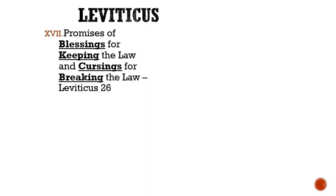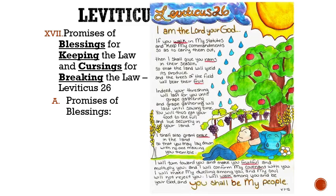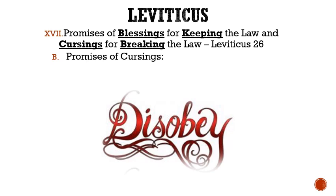Roman numeral 17: Promises of blessings for keeping the law and cursings for breaking the law are given in Leviticus 26. Promises of blessing included rain for crops, abundance of crops, peace in the land from both animals and humans, victory over their enemies where they would see five men defeating a hundred and a hundred defeating a thousand, and God's manifested presence. However, the promises of cursings included terror, sickness, fever, crop failure, defeat in battle, and wicked rulers. And if the cursings did not wake the people up, then they would receive them sevenfold.